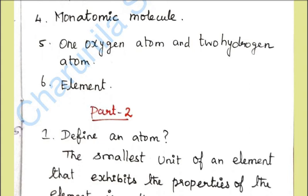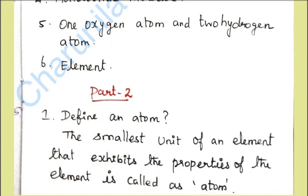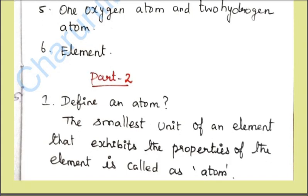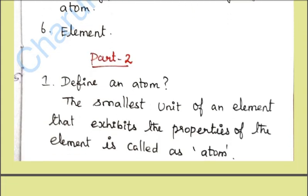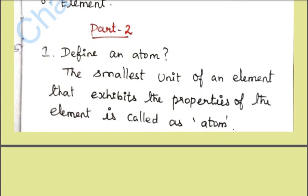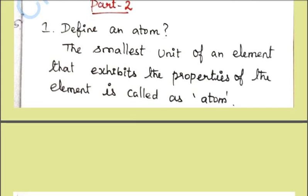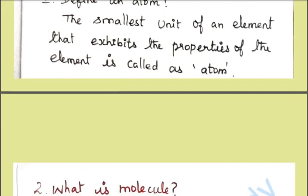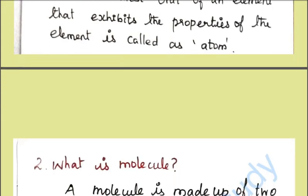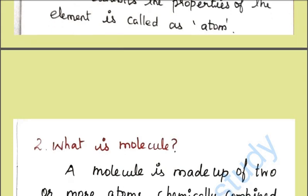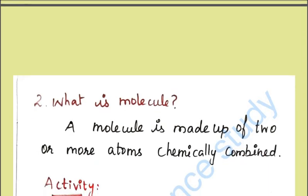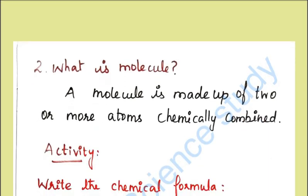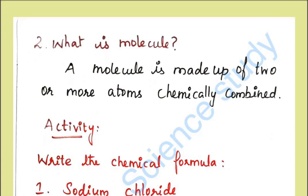In the 2-mark part: define an atom — the smallest unit of an element that exhibits the properties of the element is called an atom. What is a molecule? A molecule is made up of two or more atoms chemically combined.